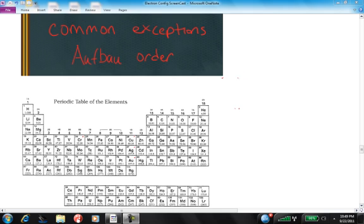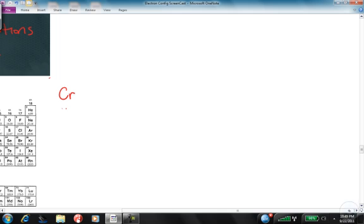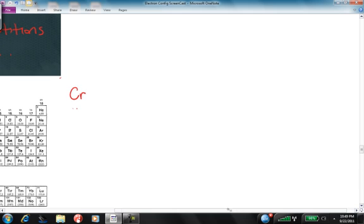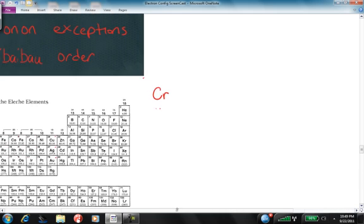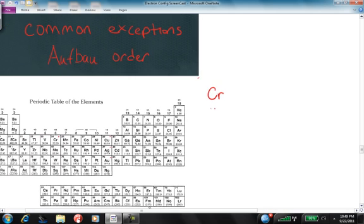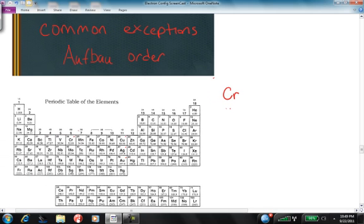First of all, let's look at the electron configuration for chromium. Chromium has an atomic number, let's find it on the periodic table here, chromium has an atomic number of 24, so that means it has 24 electrons.